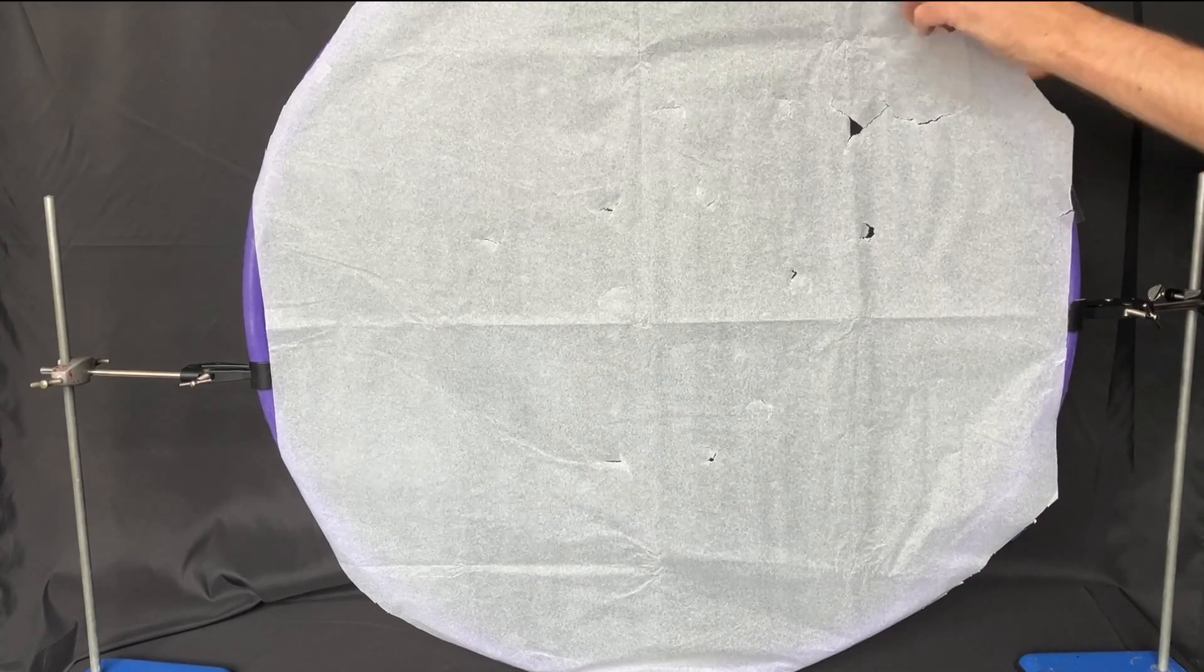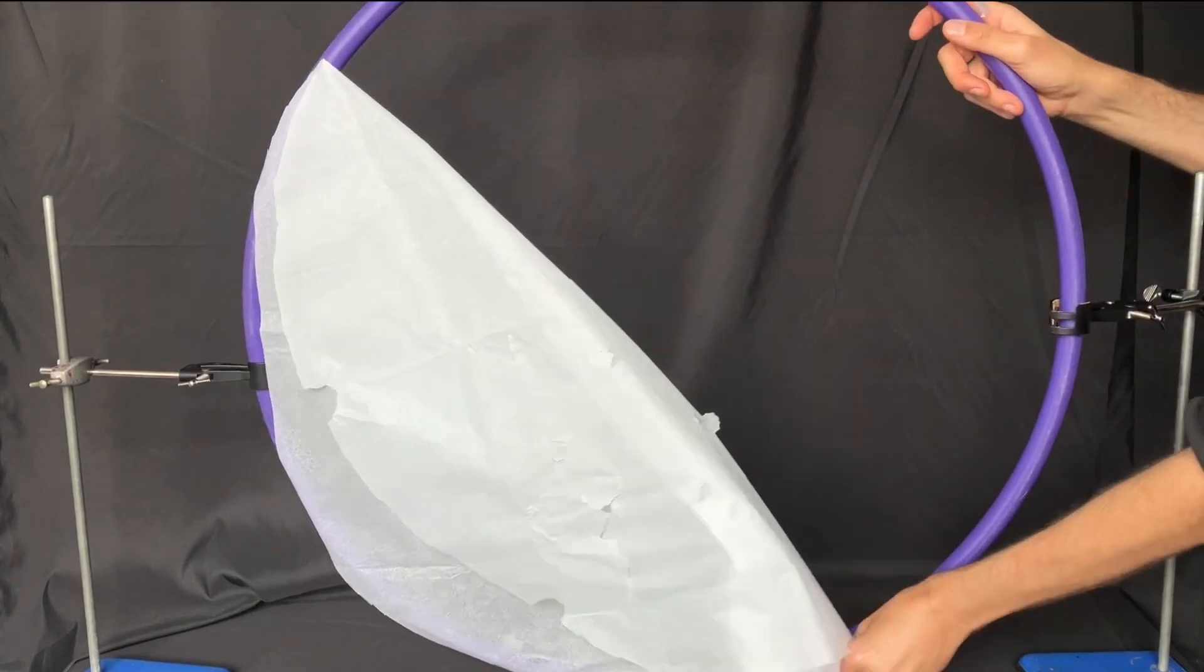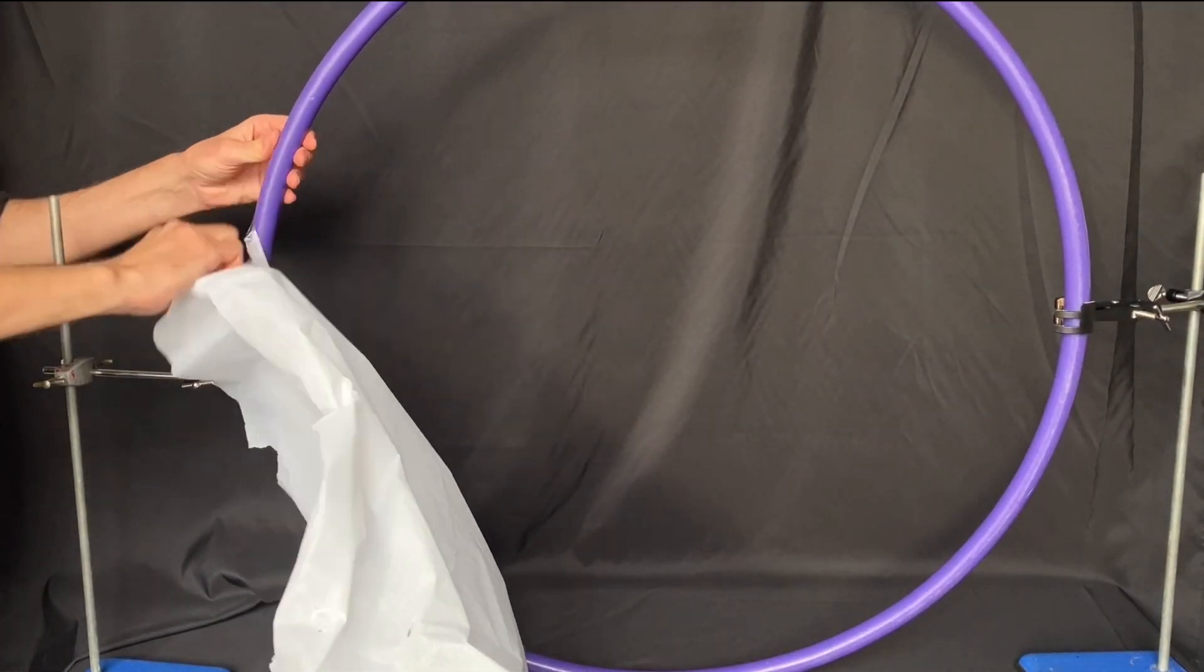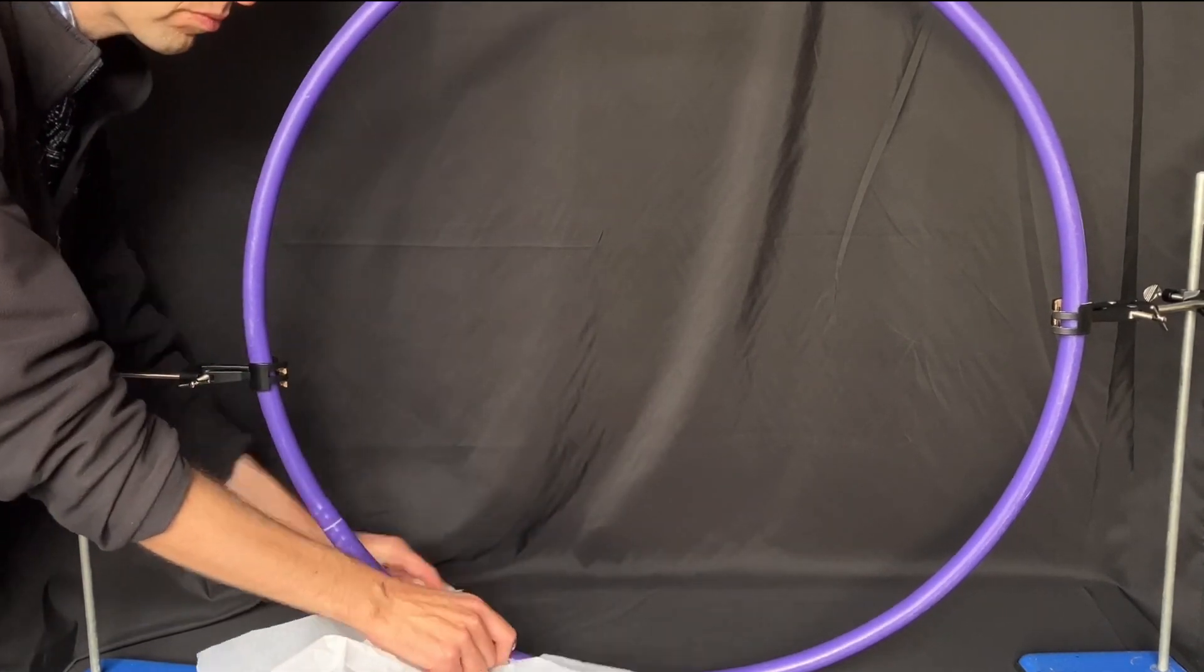Now you can tell students that Rutherford discovered that occasionally an alpha particle bounced back and ask them how we could adapt our hula hoop and tissue paper model to show this.